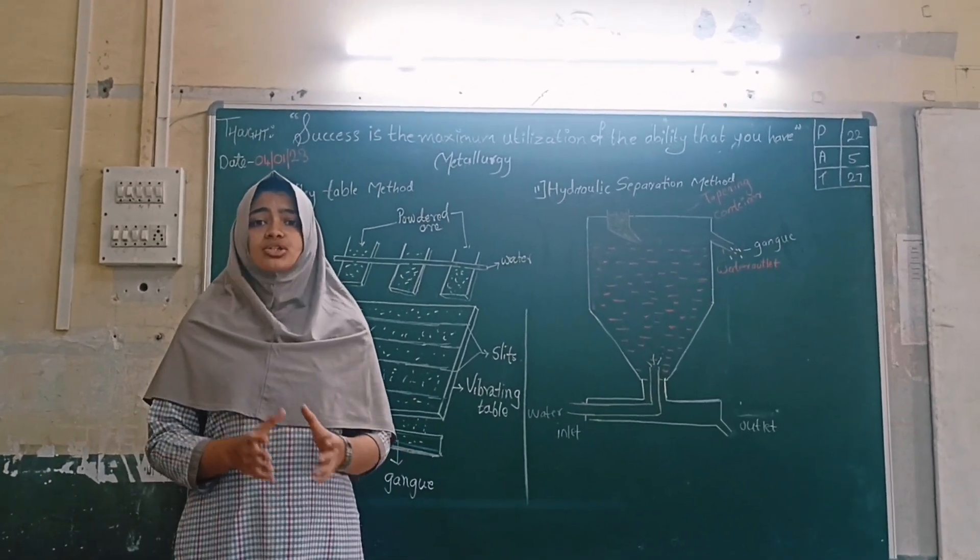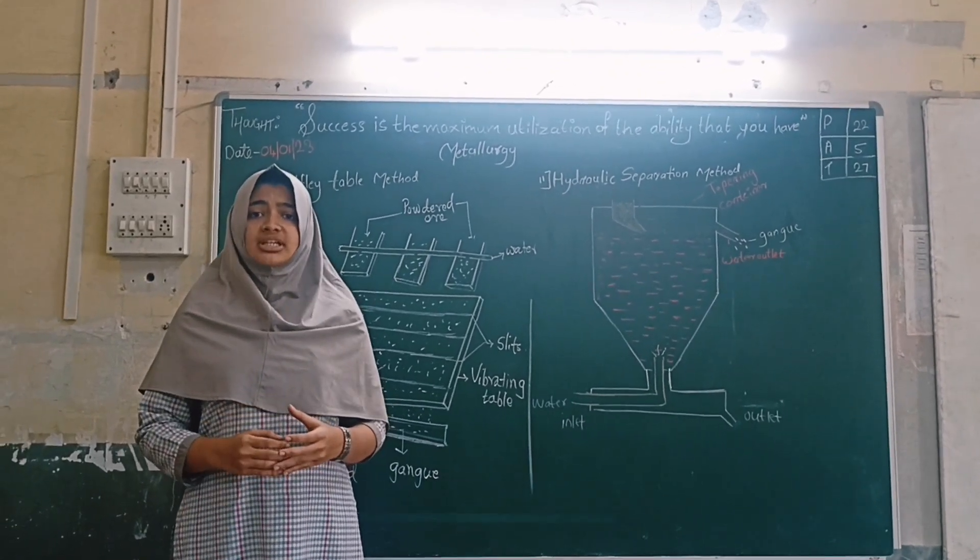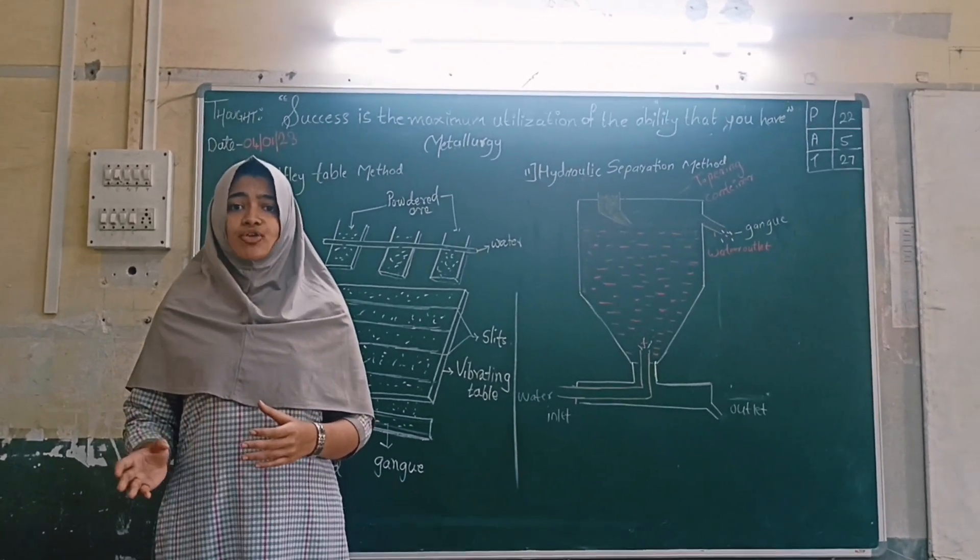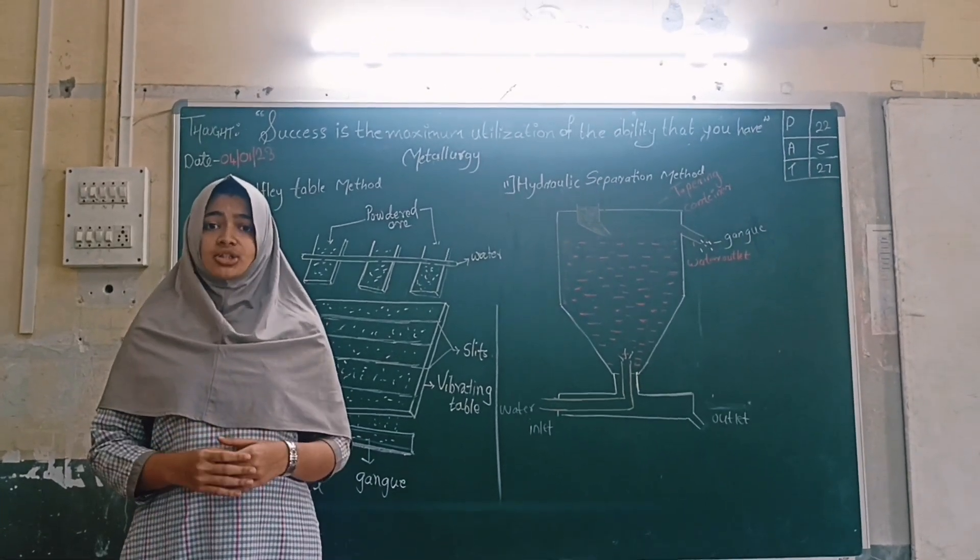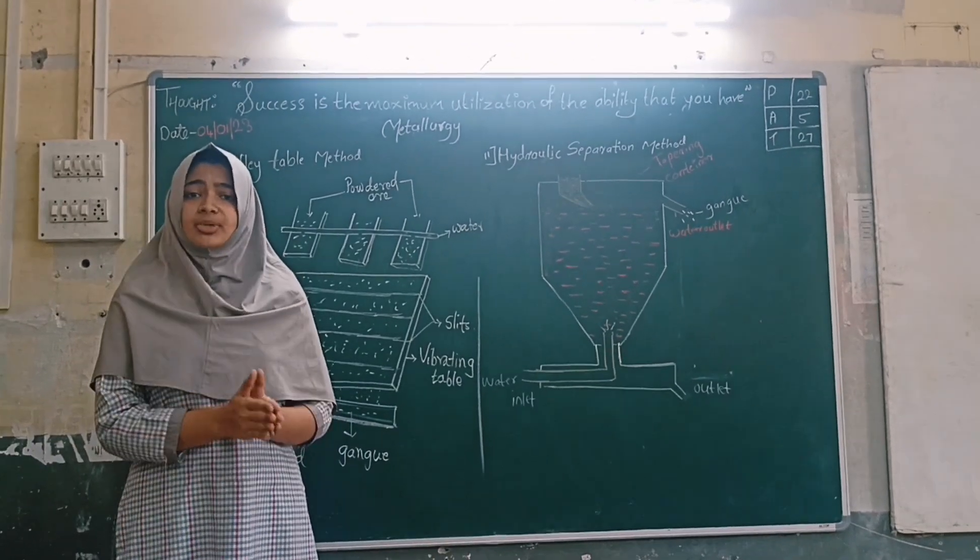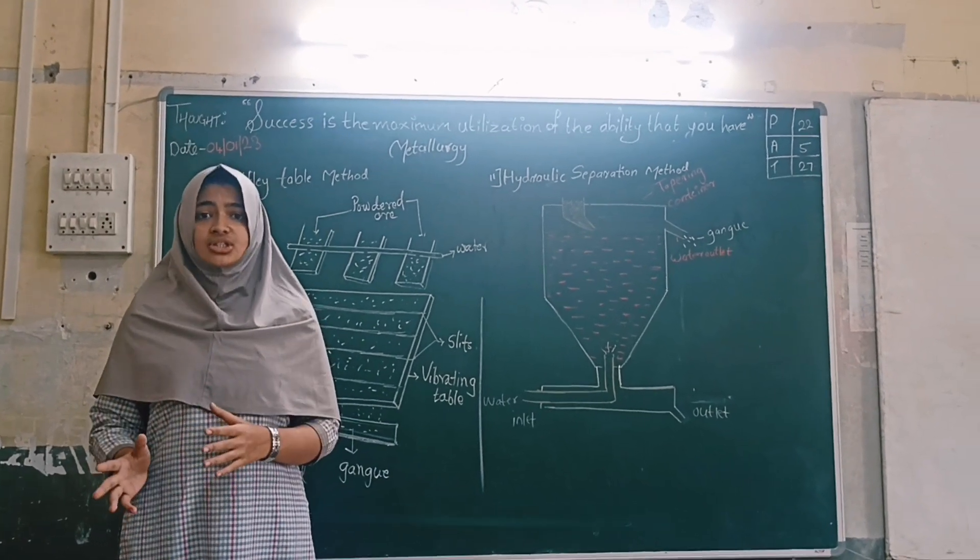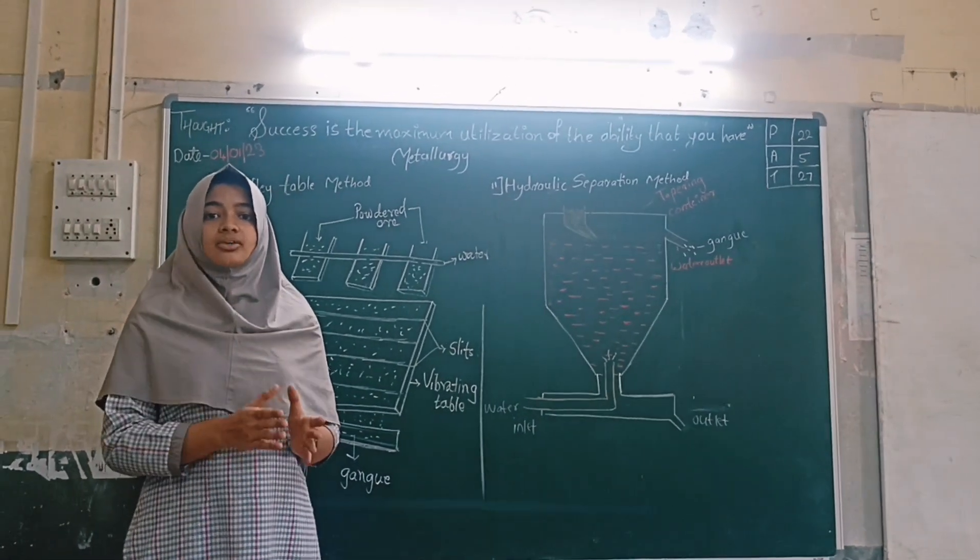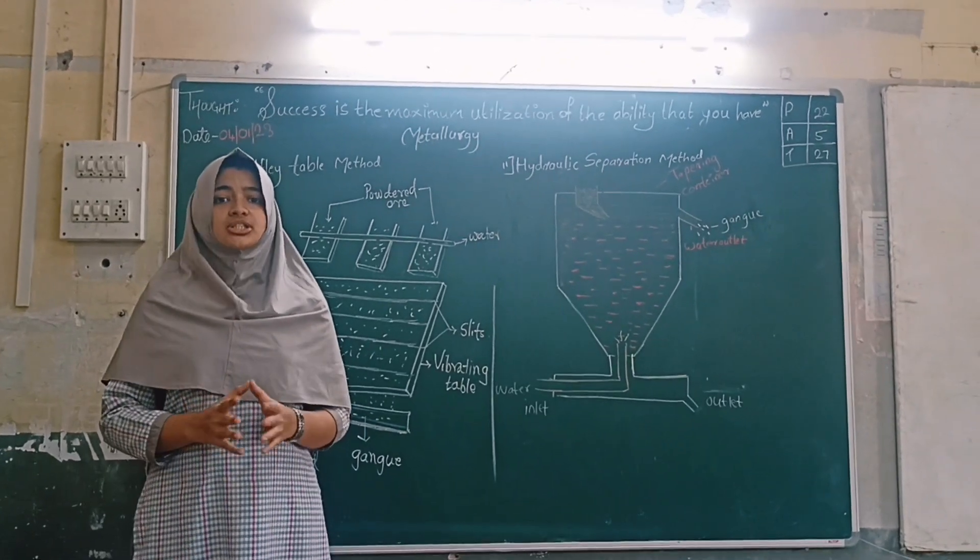Depending on factors such as physical properties, reactivity of metals and facilities available for purification, there are four ways of separating metal from ore. First is separation based on gravitation. Second is magnetic separation method. Third is froth flotation method. And fourth is leaching.